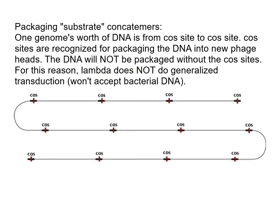The ultimate product is concatemeric molecules, and this is the form of DNA that is recognized for packaging. The cos sites are critical in this process — DNA will not be packaged without the cos sites present. This is why lambda does not do generalized transduction: the phage will not accept bacterial DNA and is extremely picky about what it packages. Anything between two cos sites will be packaged, but the cos sites must necessarily be there for that recognition to occur.